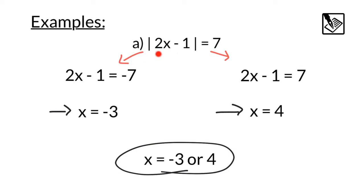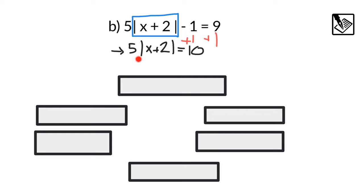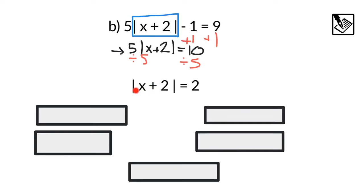We have the absolute value by itself — we set equal to the negative and the positive and solved. For this example, we have 5 times absolute value of x plus 2 minus 1 equals 9. We actually need to solve for the absolute value first. I'm going to pretend that the absolute value expression is my variable and isolate that. So I can start by adding 1 to both sides of the equation. That gives us 5 times the absolute value of x plus 2 equals 10. We divide both sides by 5.